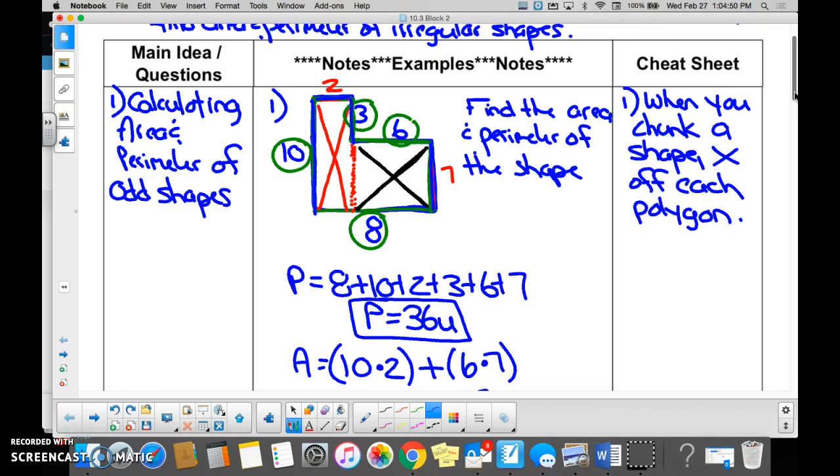How do we know this red 2 right here? Bergen? You do 8 minus 6. So this whole entire base was 8 and part of the base was 6. The only thing we didn't know was the last part of it, right? So 10 minus 6 was 2. Yes? Okay, cool.